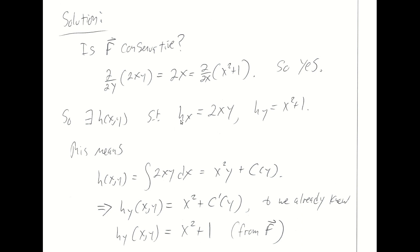There is some little h such that its partial with respect to x is the first component function of big F, and its partial with respect to y is the second component function of big F. I'm going to integrate the first component function with respect to x. I'll get x-squared-y plus some function that depends only on y — an expression constant with respect to x. That is little h. So I started with its partial with respect to x, 2xy, backed out to get h, and now I'll take the partial of that with respect to y. That gives me x-squared plus c prime of y.